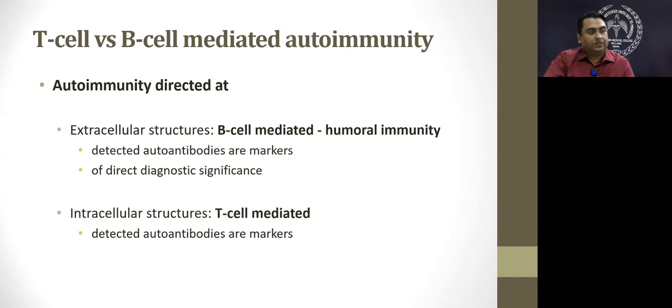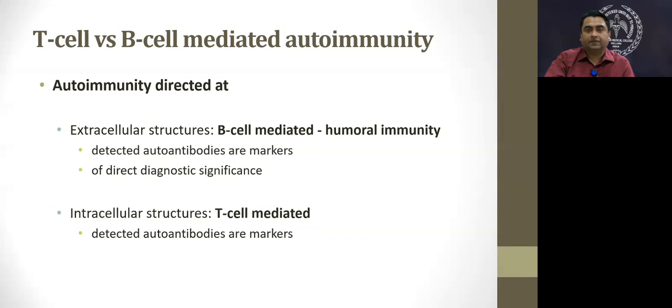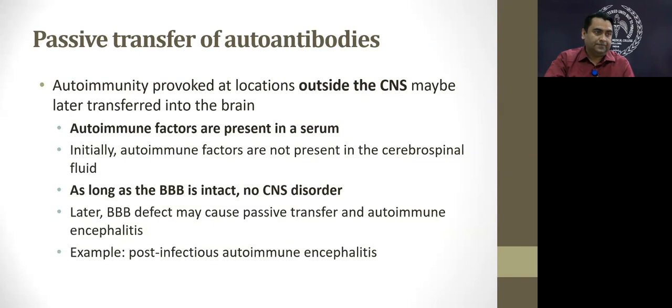Regarding the autoimmunity involved, we are talking about both B cell and T cell mediated autoimmunity. The immunity directed at extracellular structures is usually B cell mediated — humoral immunity — and the detected autoantibodies are both markers and of direct diagnostic significance for the illness. Whereas those against intracellular structures are T cell mediated, and the detected autoantibodies are markers but may not be of direct diagnostic significance.